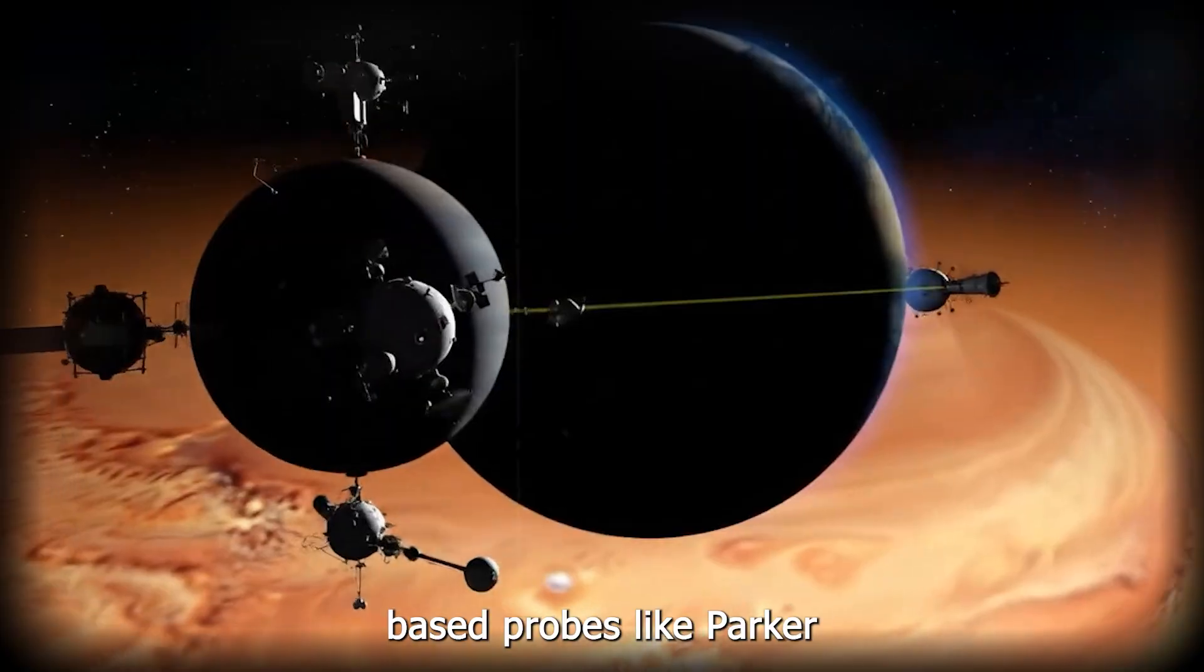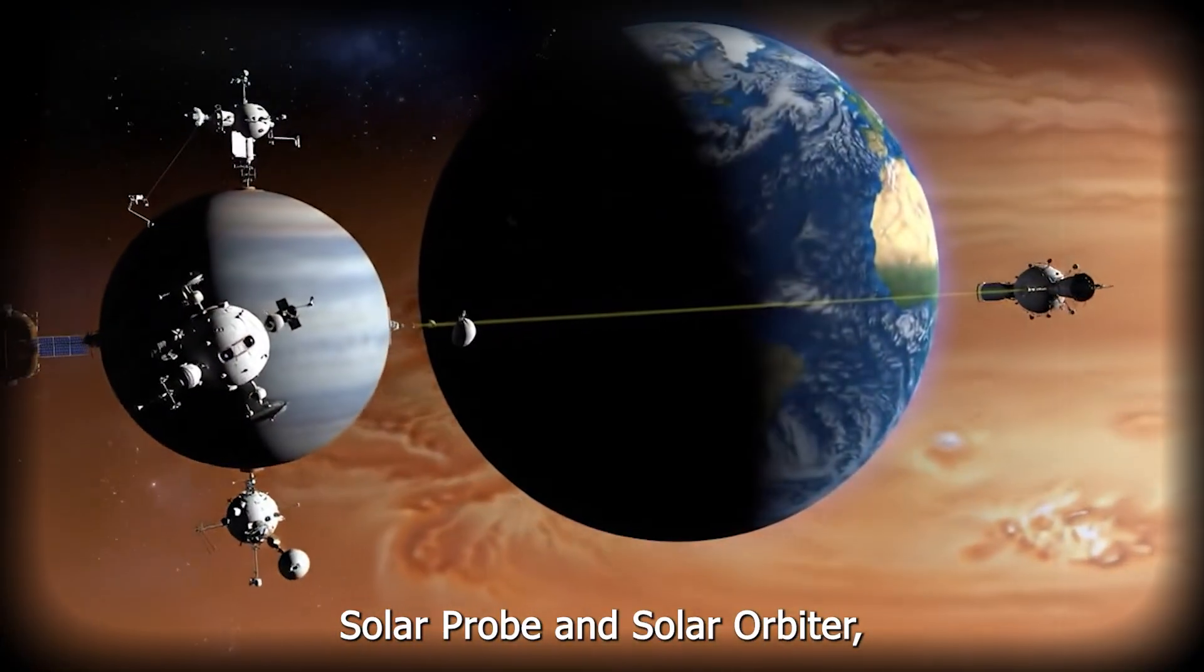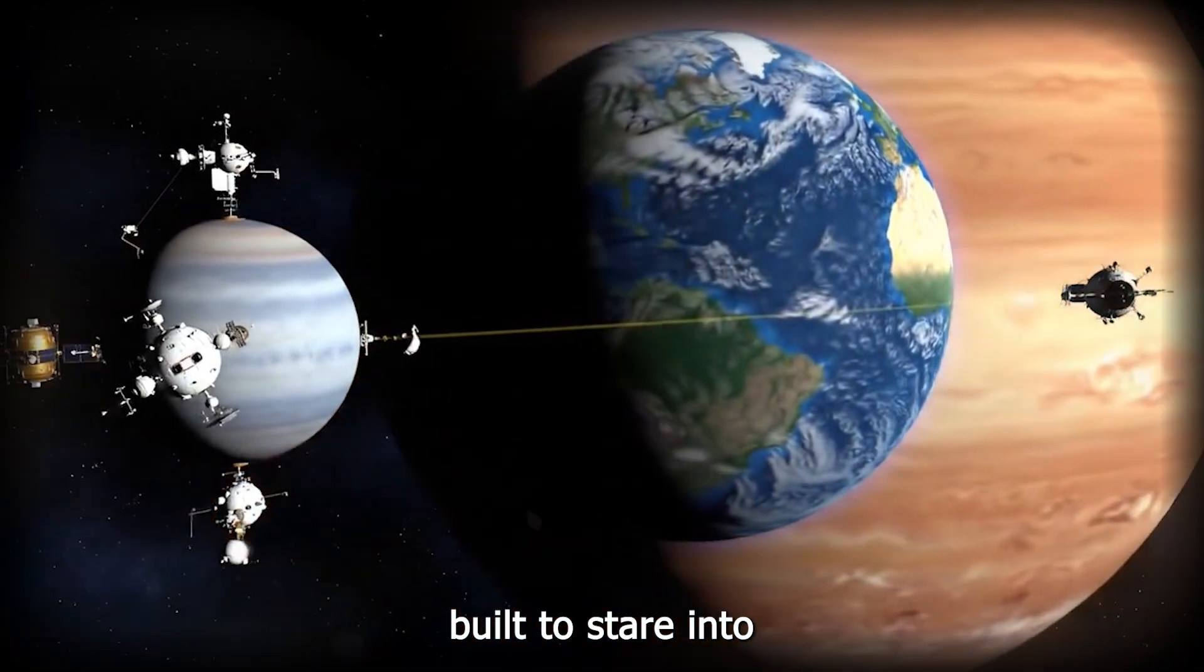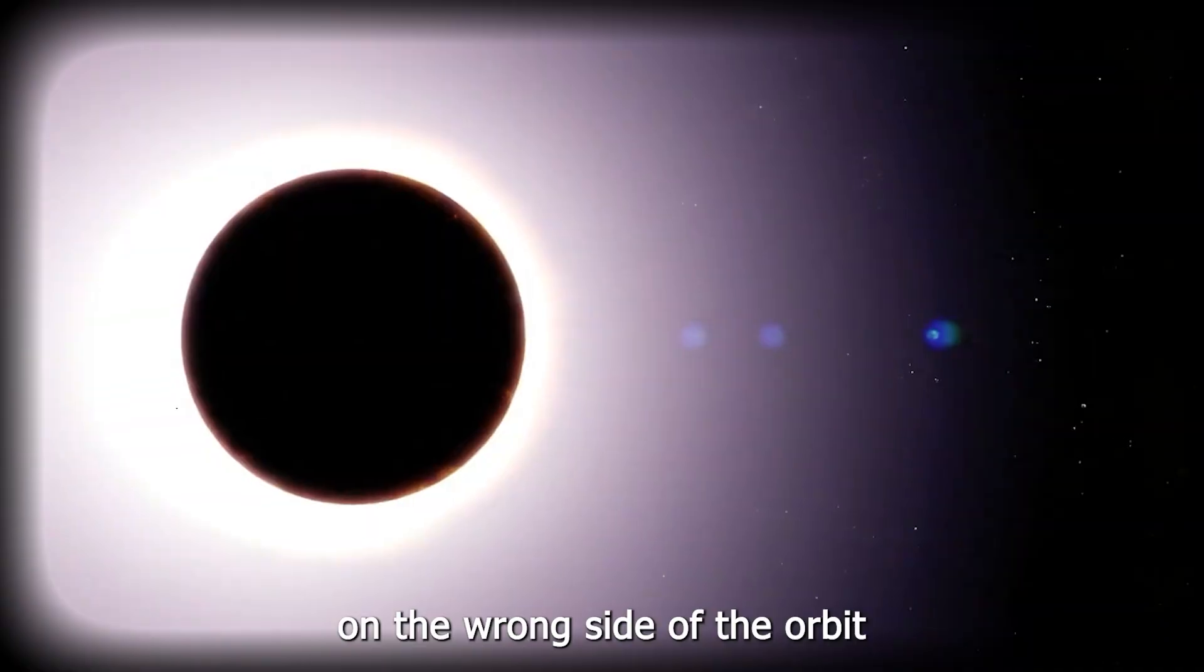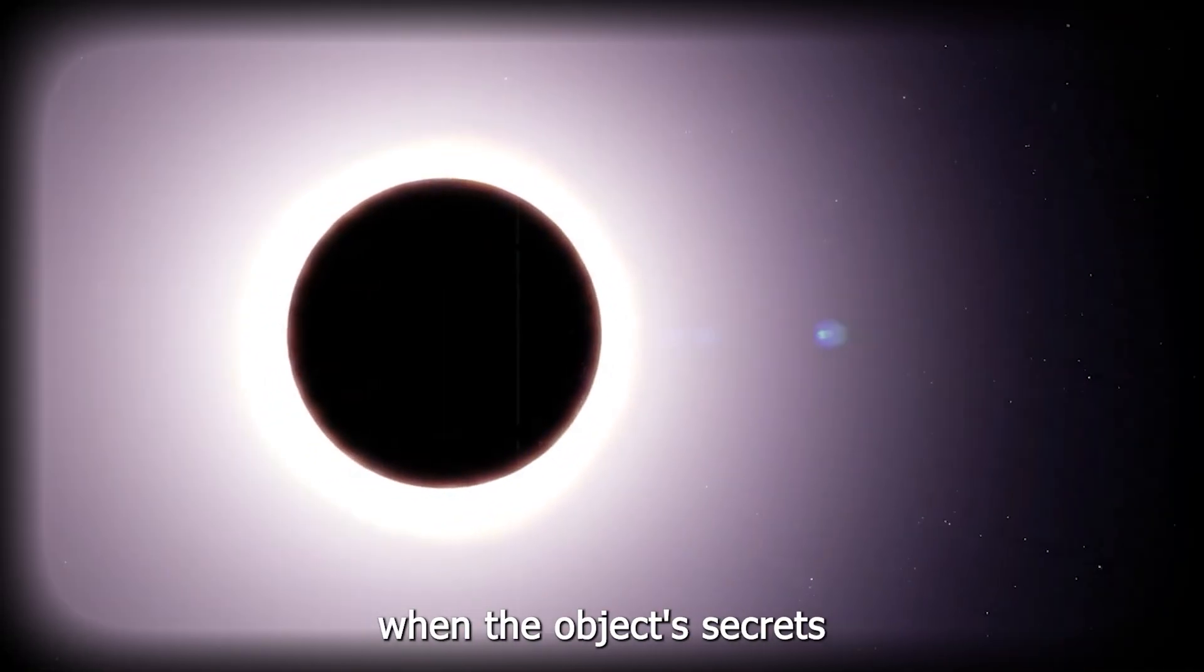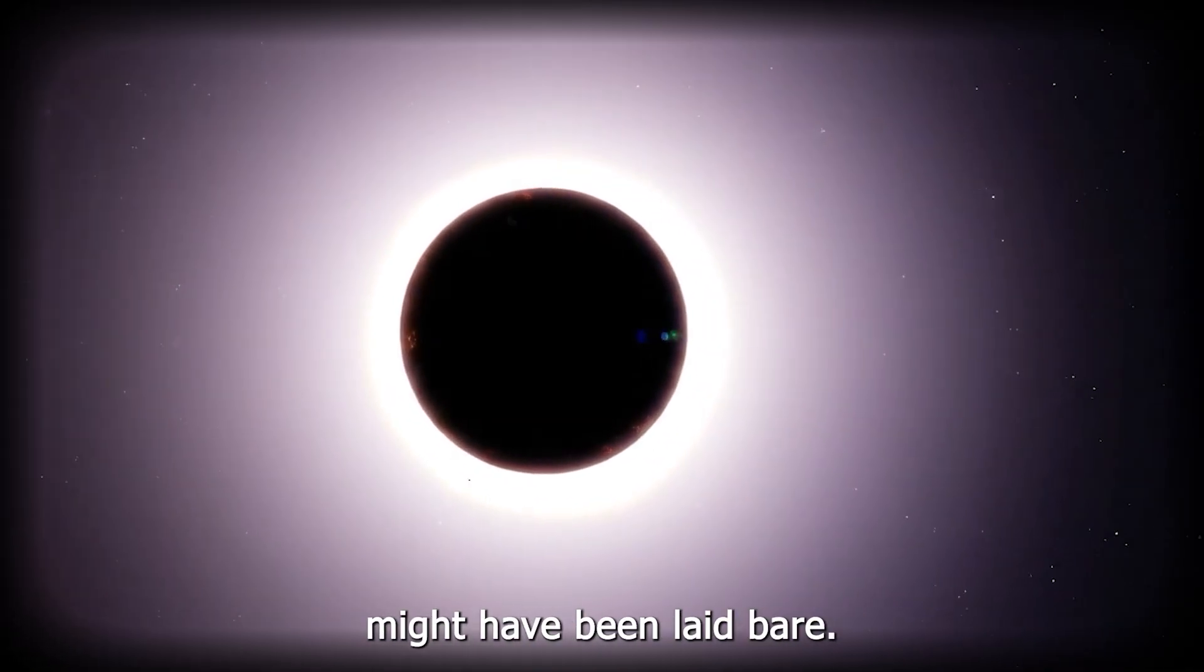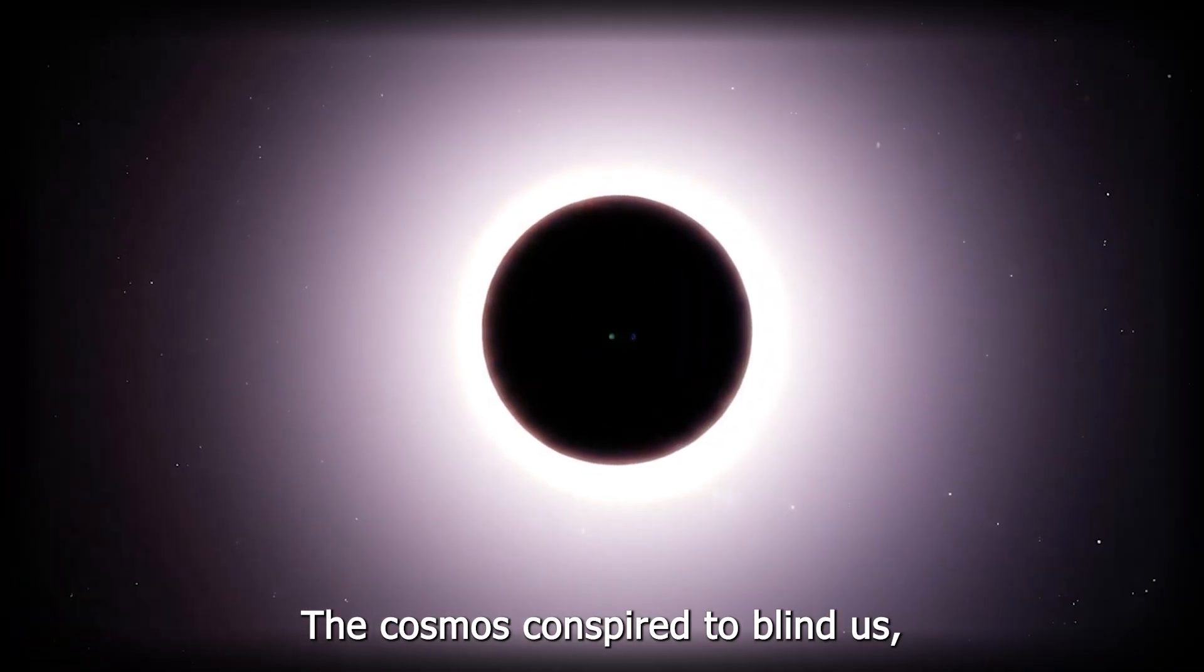Even space-based probes like Parker Solar Probe and Solar Orbiter, built to stare into the Sun, were positioned on the wrong side of the orbit. At the very moment when the object's secrets might have been laid bare, the cosmos conspired to blind us.